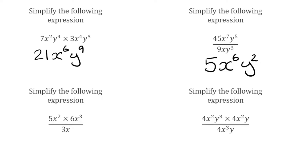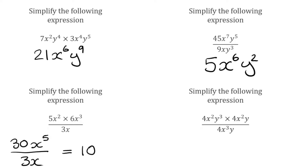For this next question, we've got 5x squared multiplied by 6x cubed, then divided by 3x. We're going to simplify the numerator first, then divide by the denominator. Simplifying the numerator: 5 times 6 is 30, and x squared multiplied by x cubed is x to the power of 5. Now dividing by 3x: 30 divided by 3 is 10, and x to the power of 5 divided by x — subtracting the indices, 5 take away 1 is 4 — gives x to the power of 4.